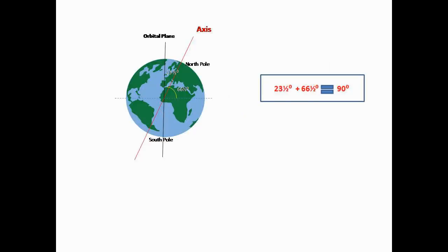Earth is tilted on the poles. An imaginary line which we have named the axis shows how tilted Earth is. The two ends where this axis passes are said to be the poles of Earth — named as North Pole and South Pole. We draw another imaginary line in vertical and horizontal positions, geographically called the orbital plane. The axis makes an angle of 66.5 degrees with Earth's horizontal orbital plane and 23.5 degrees with Earth's vertical orbital plane. Summing them together, it makes a 90-degree angle.